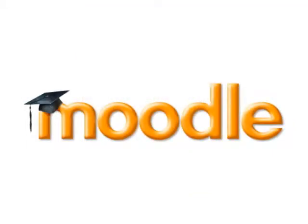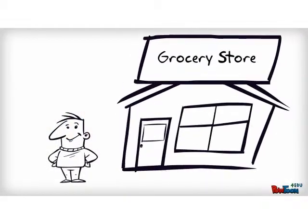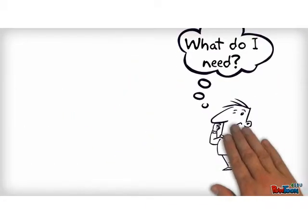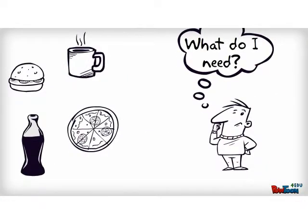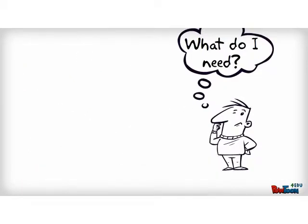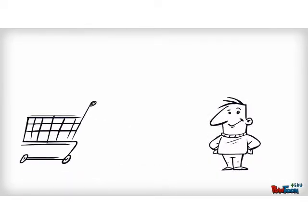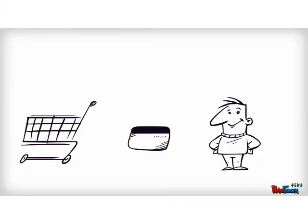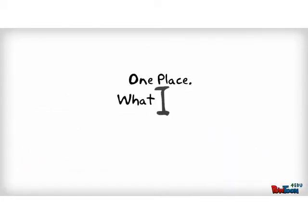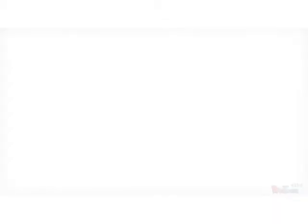Ann Thorpe once described Moodle as a grocery store. Let's say I need to go to the grocery store to stock up on some food. Even though there's a wide variety of things to choose from, I'm just looking for what's on my list. Sometimes I'll need an entire cart of groceries; other times it might just be a few items. The point is, when I need to buy food, I only have to go to one place and find what I need when I need it. The same thing works for Moodle and other learning management systems — it's a way for teachers to organize their content so that students can have access to what they need to learn when they need to learn it.